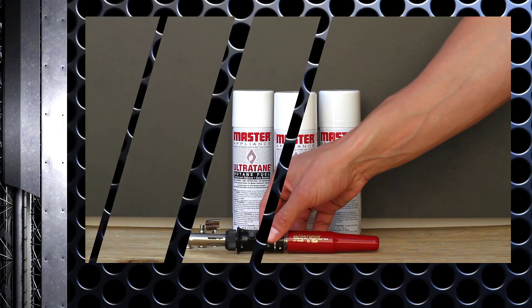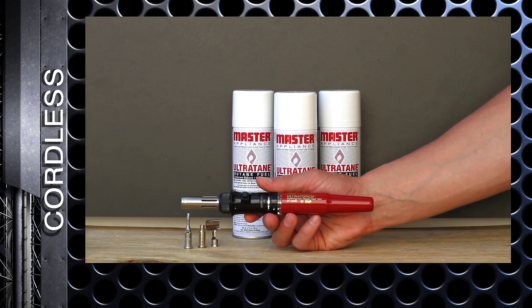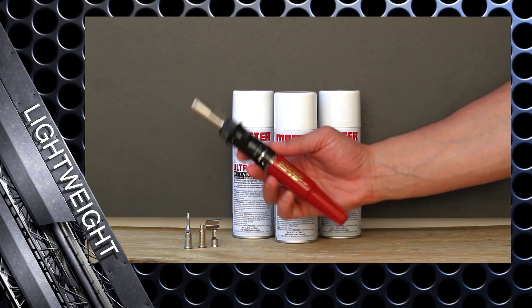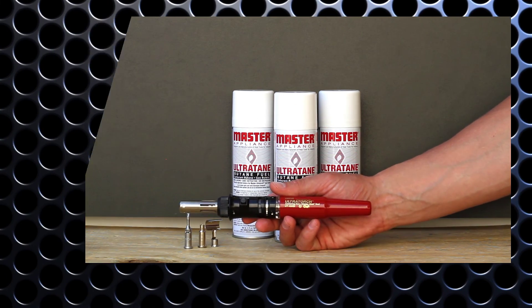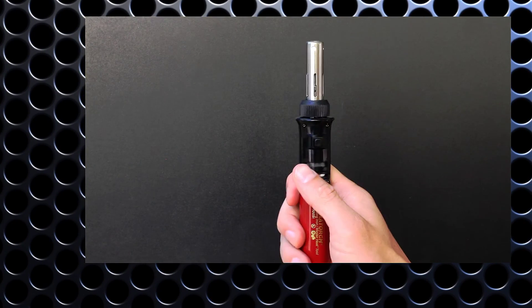Master's Ultra Torches are cordless, lightweight, and completely portable, providing up to 80 watts of power, equivalent to electric soldering iron.